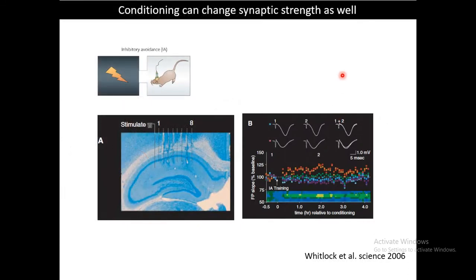This kind of artificial protocol changing synaptic strength suggests that synapses are not rigid — they are plastic, and their strength could be changed. But the question is: could a similar kind of plastic change happen underlying learning and experience-dependent tasks?